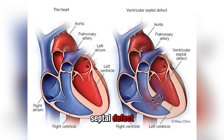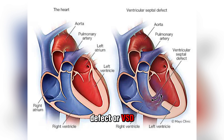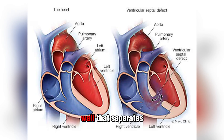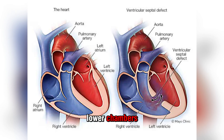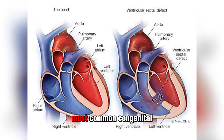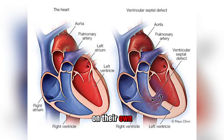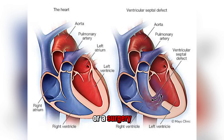8. Ventricular Septal Defect (VSD): A ventricular septal defect is like an atrial septal defect, but it's a hole in the wall that separates the heart's two lower chambers — the ventricles. VSD is the most common congenital heart defect. Many of these holes can close on their own, but some may require a procedure or surgery to close them.